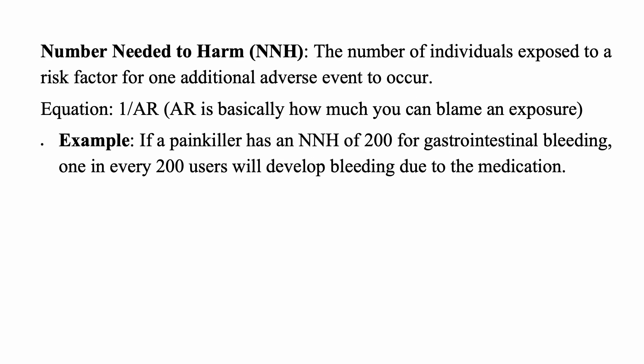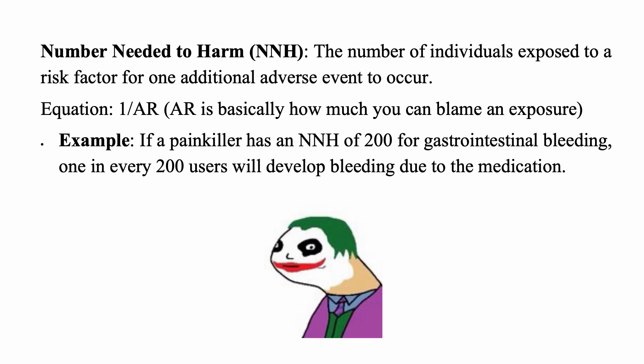Number needed to harm is the number of individuals exposed to a risk factor for one additional adverse event to occur — from a medication or an exposure. The equation is 1 over the attributable risk, which is calculated by subtracting the risk in the exposed group from the baseline. For example, if a painkiller has a number needed to harm of 200 for GI bleeding, one in every 200 users will develop bleeding due to the medication.